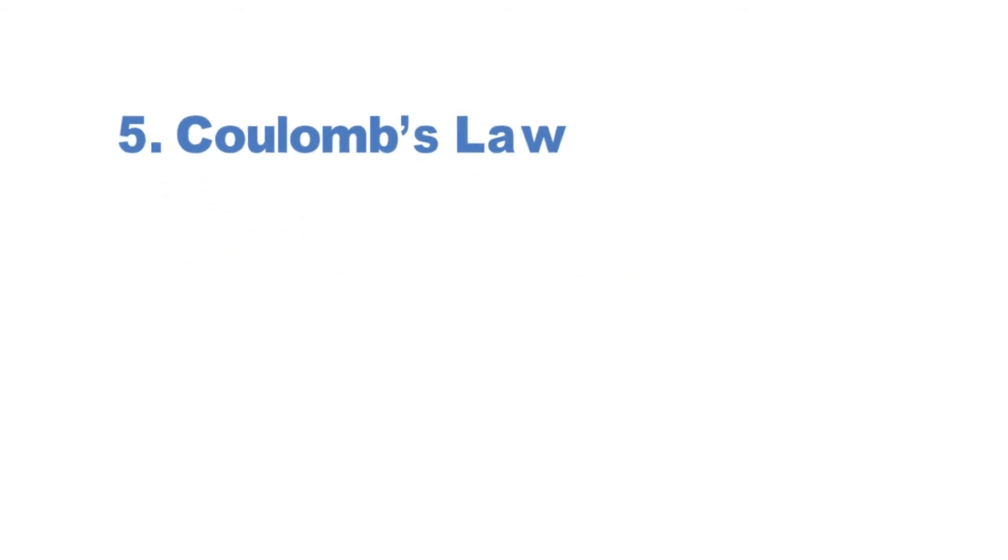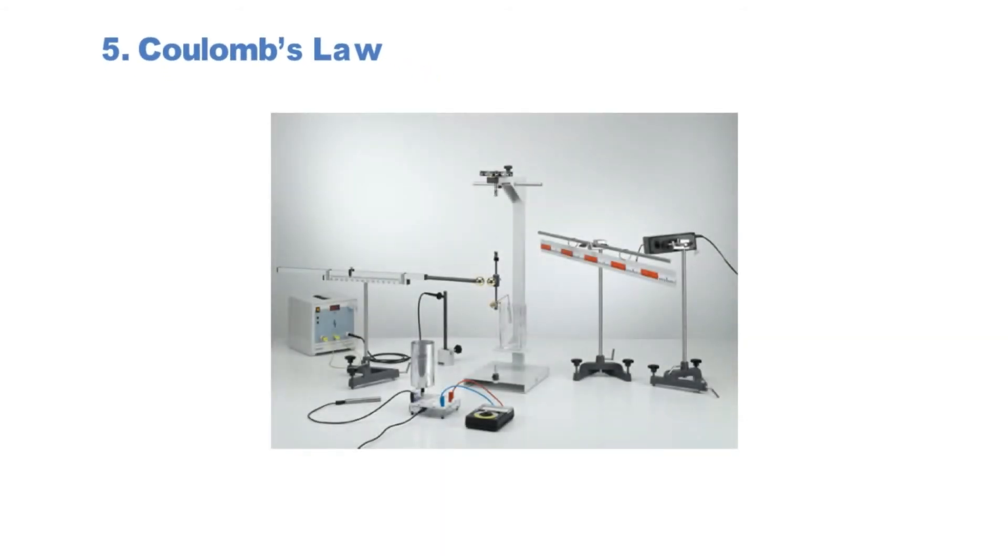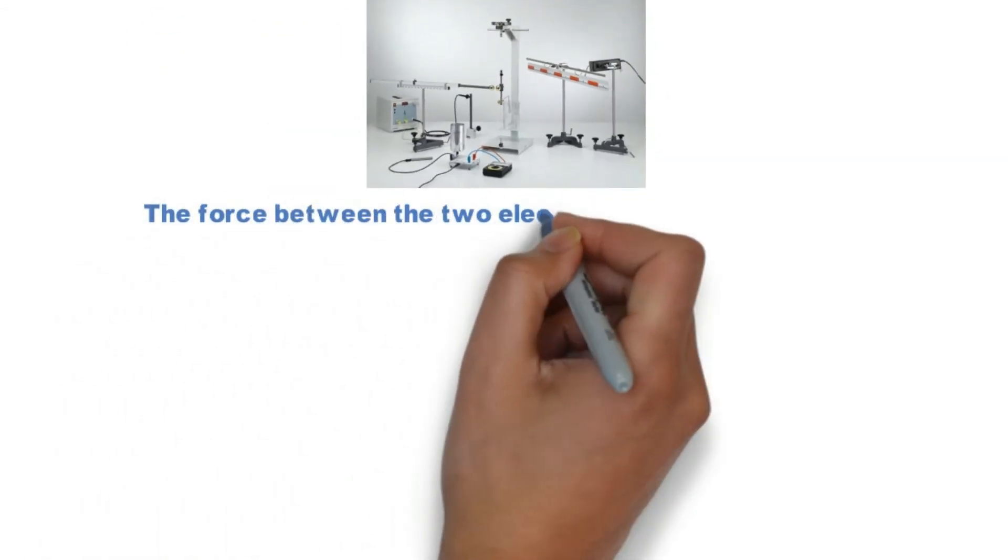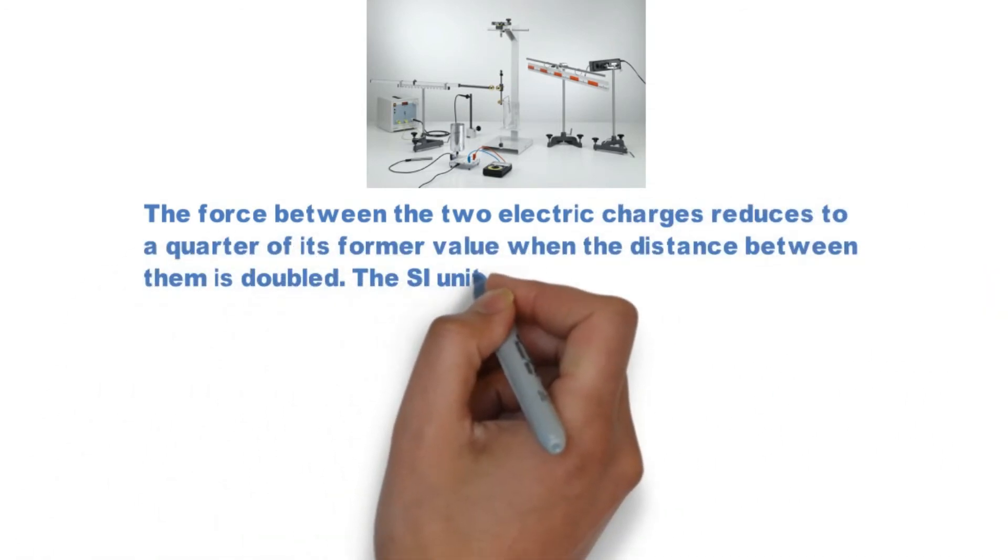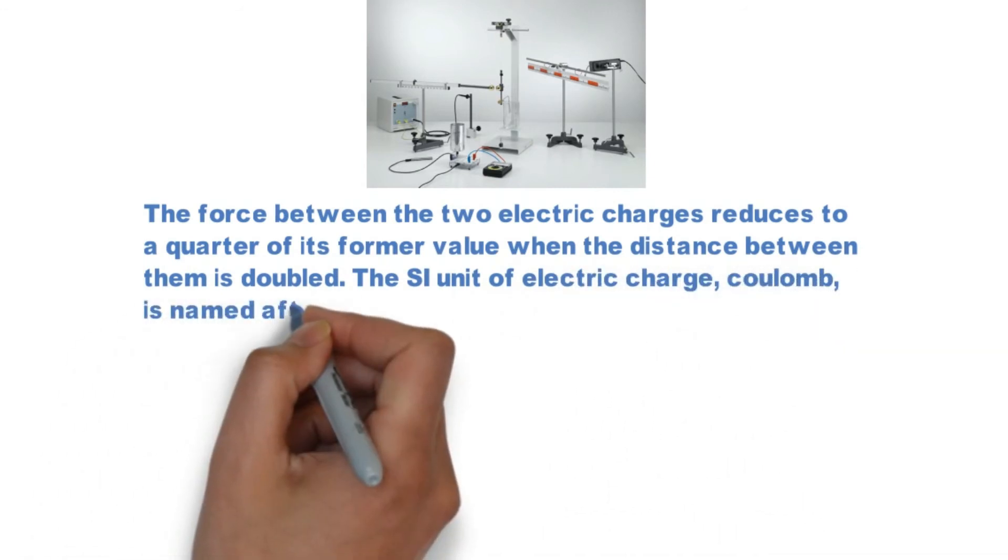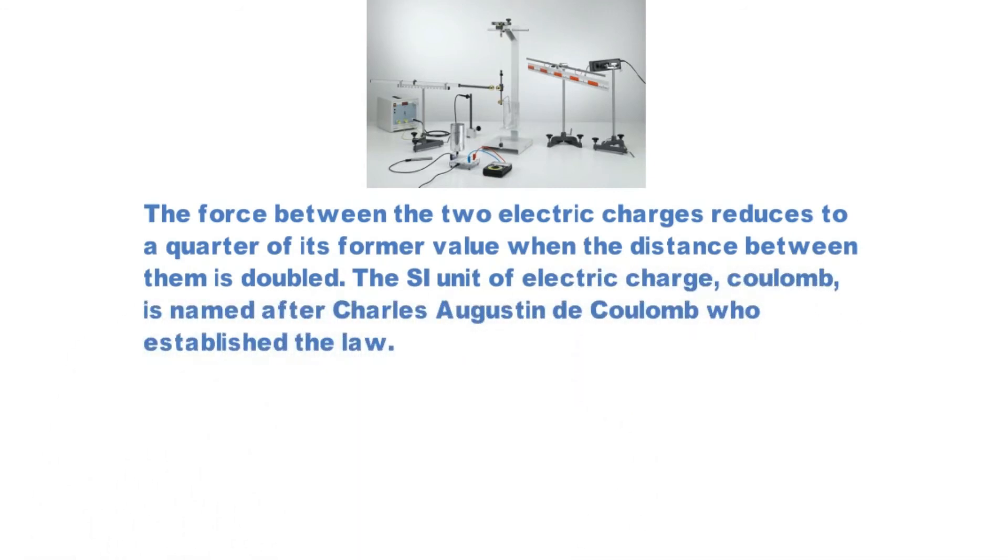Coulomb's Law. The force between the two electric charges reduces to a quarter of its former value when the distance between them is doubled. The SI unit of electric charge, Coulomb, is named after Charles Augustine de Coulomb who established the law.